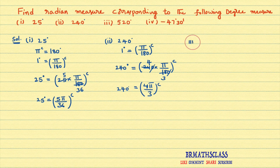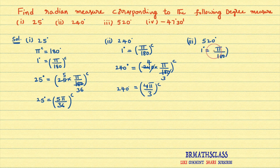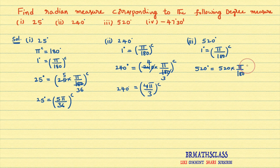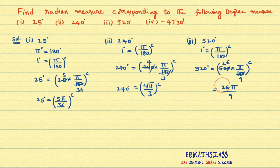Now see the third one: 520 degrees. We need to convert 520 degrees into radians. You must know what 1 degree is: 1 degree is π/180 radians. To get 520 degrees, multiply both sides by 520. That gives 520 × π/180 radians. The zeros cancel, leaving 52/18. Using the 2 times table: 52 divided by 2 is 26, and 18 divided by 2 is 9. So 520 degrees equals 26π/9 radians.